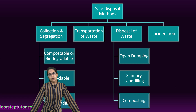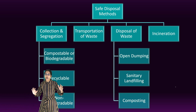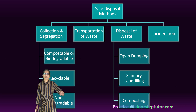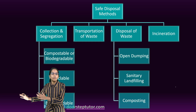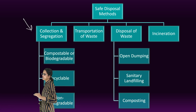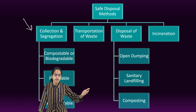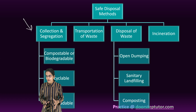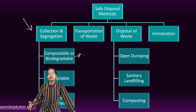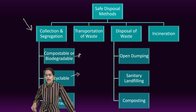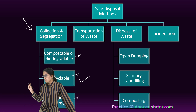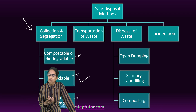Now how do we manage waste? Management can be done by four simple ways: collection and segregation, transportation, proper disposal, and incineration. Under collection and segregation, we classify waste into biodegradable, non-biodegradable, and recyclable. Biodegradable waste such as litter and food residue can become manure. Recyclable waste includes plastic, tin foils, and aluminium foils. Non-biodegradable waste includes automobile waste, tube lights, and torches.